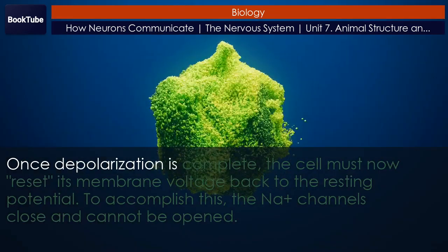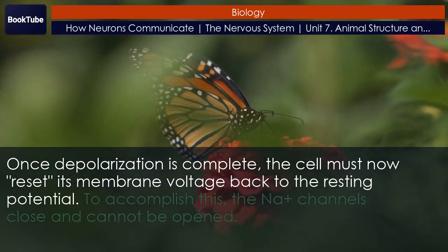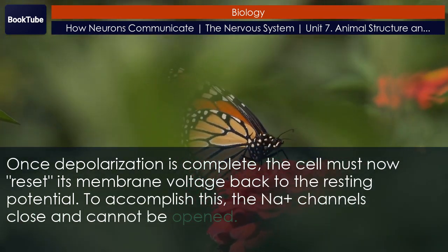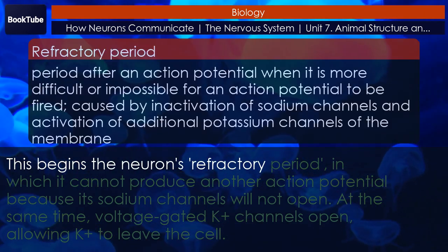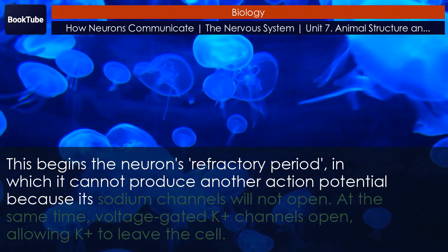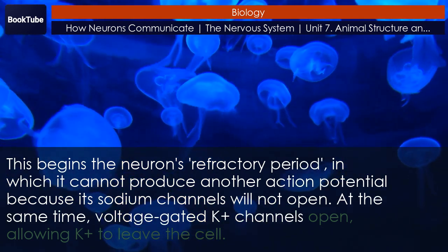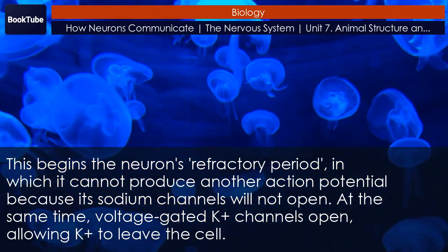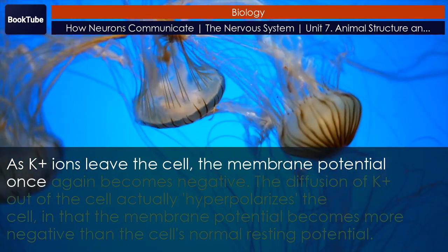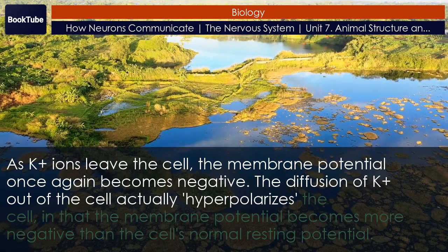Once depolarization is complete, the cell must reset its membrane voltage back to the resting potential. To accomplish this, the Na+ channels close and cannot be opened — this begins the neuron's refractory period, in which it cannot produce another action potential because its sodium channels will not open. At the same time, voltage-gated K+ channels open, allowing K+ to leave the cell. As K+ ions leave the cell, the membrane potential once again becomes negative. The diffusion of K+ out of the cell actually hyperpolarizes the cell.